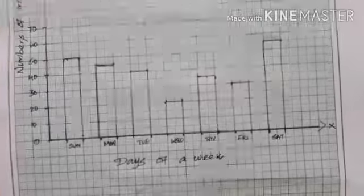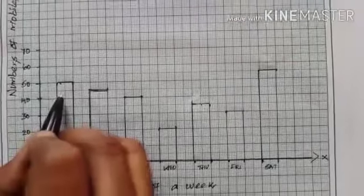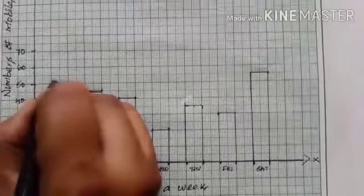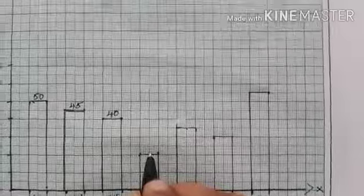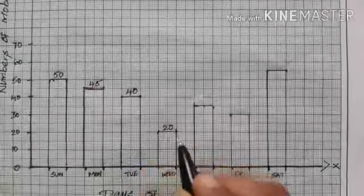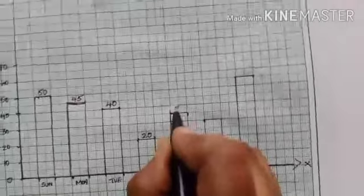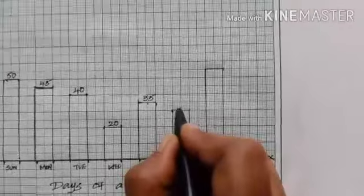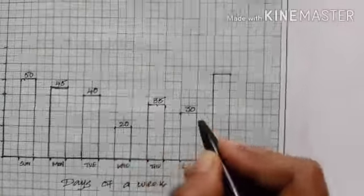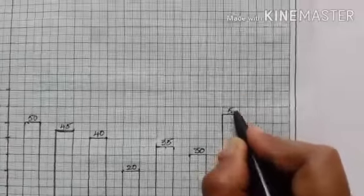You also have to write the numbers on the top of each bar. Sunday is 50, Monday is 45, Tuesday is 40, Wednesday is 20, Thursday is 35, Friday is 30, and Saturday is 55.